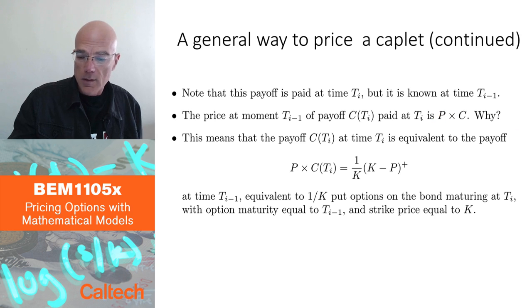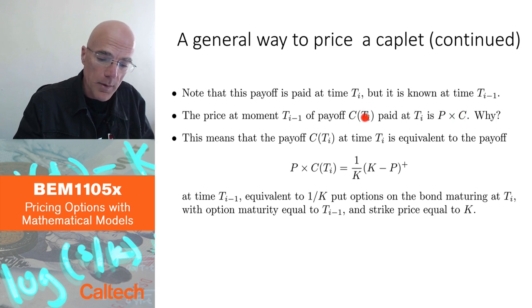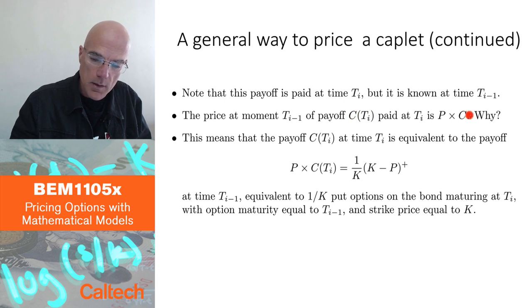This is the price of the bond. So, once again, because I know C at time Ti minus 1, I know how many bonds I have to buy. So, I buy C bonds that costs me P times C because each bond costs P. And I will have, so I bought C bonds, which means I will have C dollars at time Ti, which is what I want to replicate. So, the value of C at the previous period at Ti minus 1 is P times C.